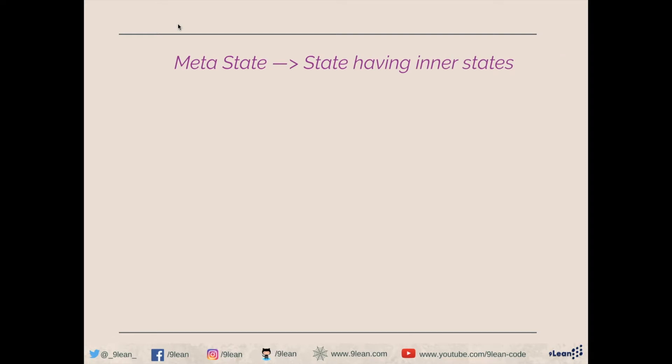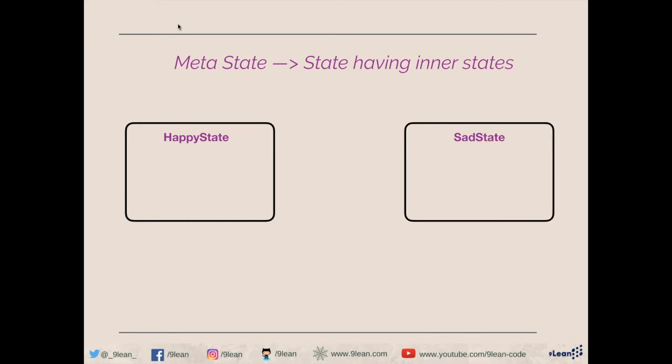A metastate is a state where we have multiple inner states. Consider our previous examples where we had two states: one is a happy state, another is the sad state, and we move between happy state and sad state and vice versa based on some events.